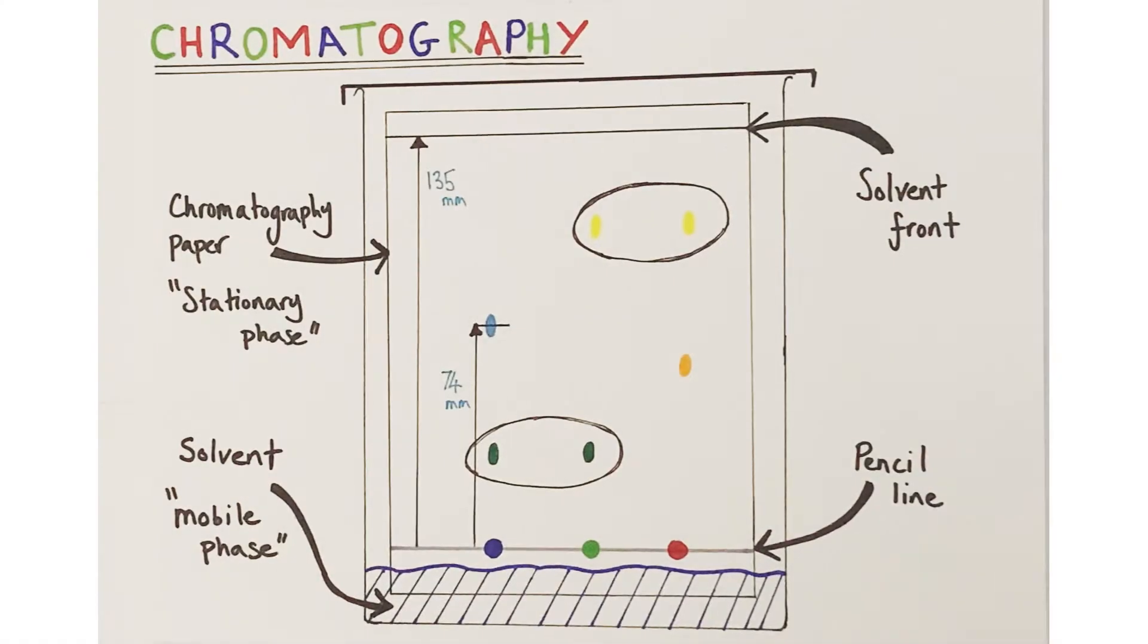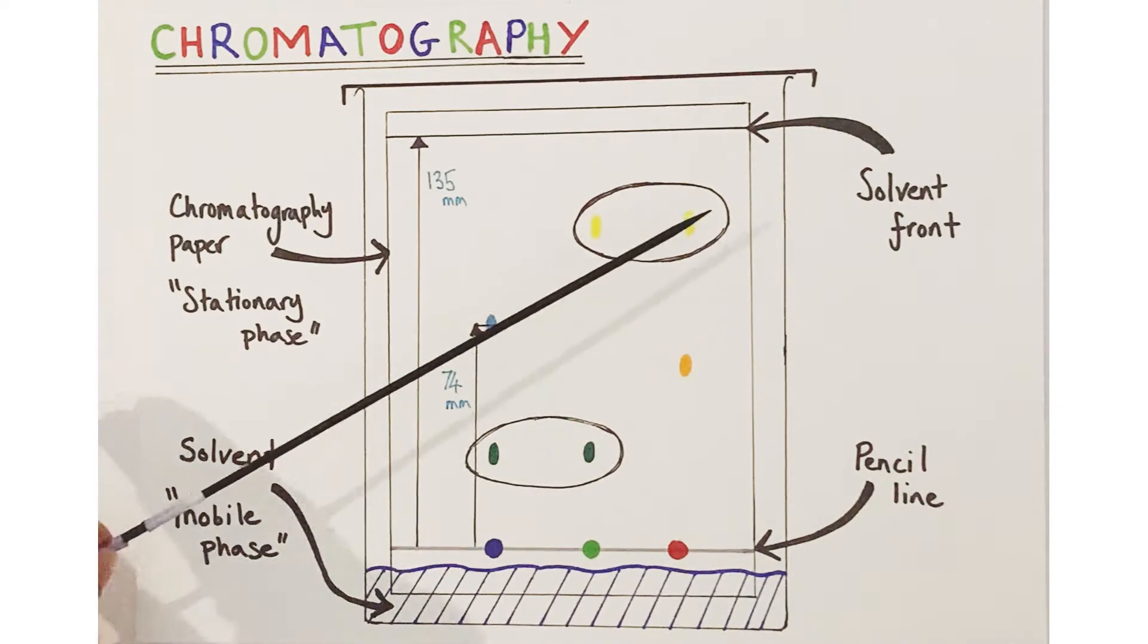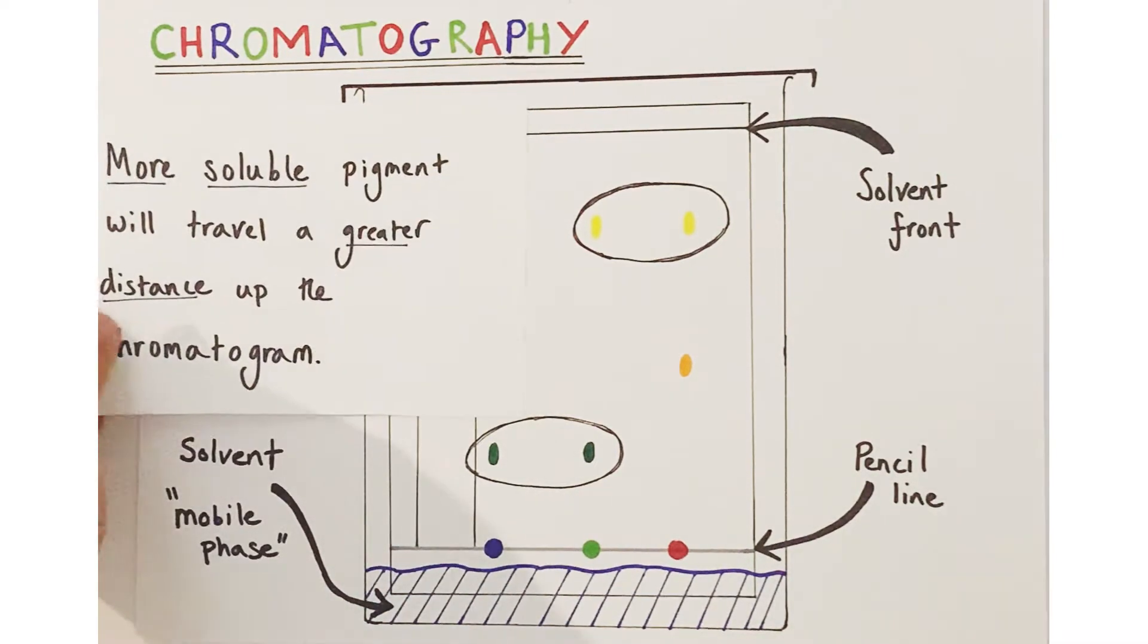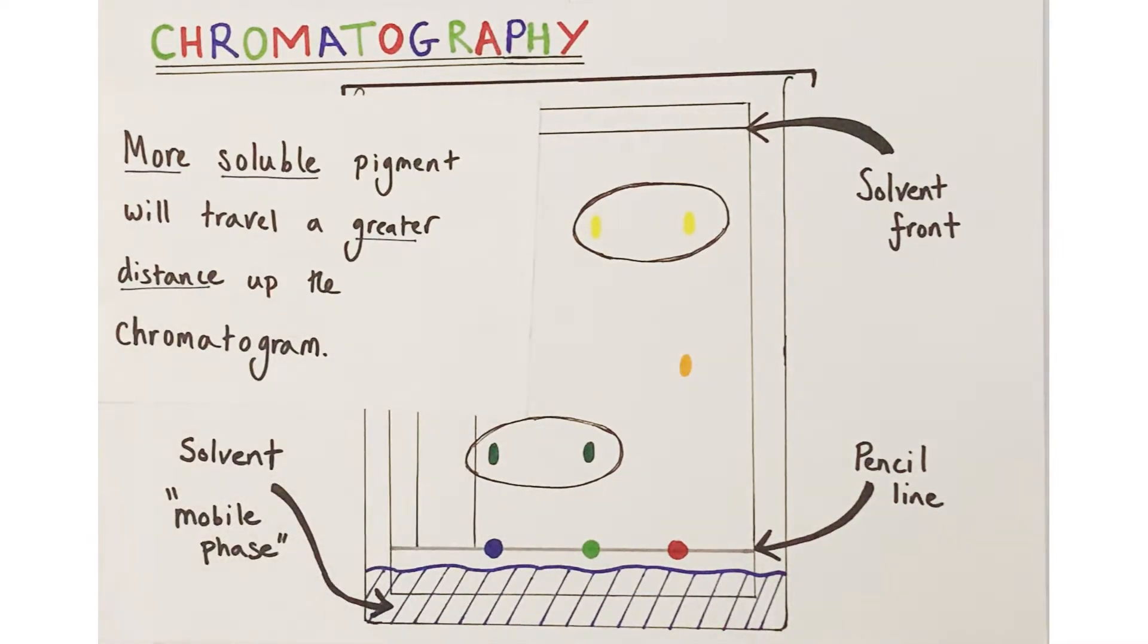Right guys, let's get into the practical itself. Hopefully we can see from this particular diagram that as the solvent travels up the chromatography paper, different colored pigments travel different distances based upon their solubility in the particular solvent. The key idea here is that the more soluble pigment will travel a greater distance up the chromatography paper or the chromatogram.